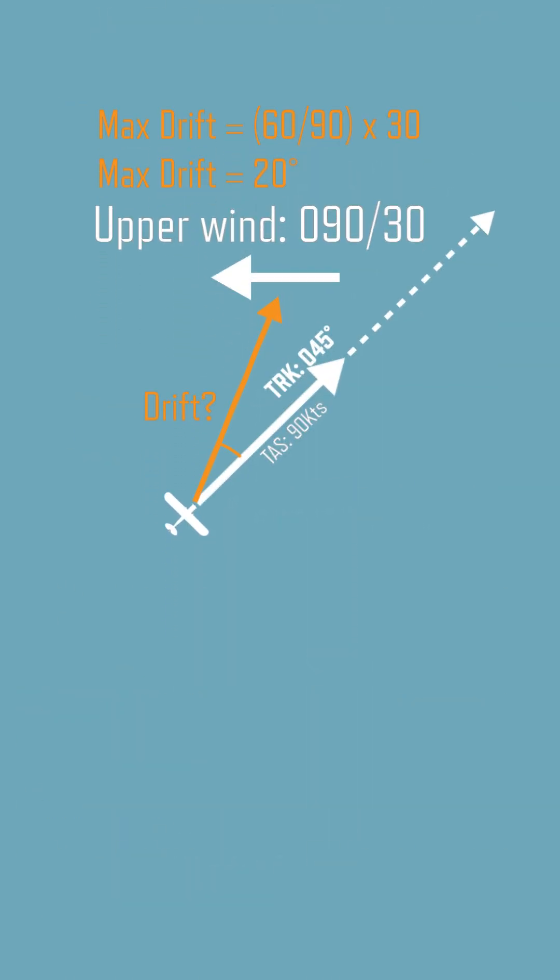Now all that is left is to calculate the drift on a given track. This is done using something referred to as the clock code. Take the angle from the track to the wind, call 60 to 90 degrees full max drift. Anything up to 60 degrees, the amount of drift is equal to the angle as a fraction of 60 multiplied by the max drift.